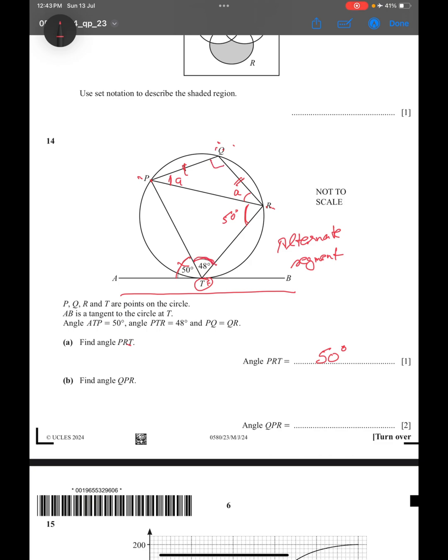So Q plus 48 equals 180 degrees. What is Q? Q will be 180 minus 48, so this is 132 degrees. So this is 132 degrees.